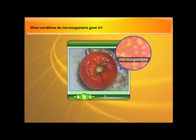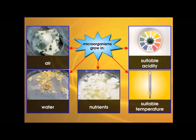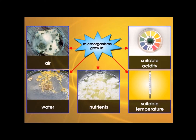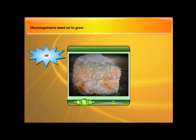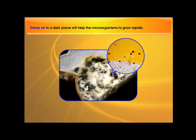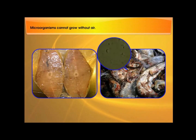What conditions do microorganisms grow in? Microorganisms grow in the following conditions. Microorganisms need air to grow. Damp air in a dark place will help the microorganisms to grow rapidly. Microorganisms cannot grow without air.